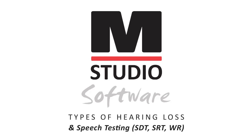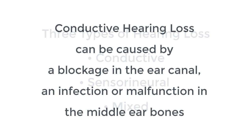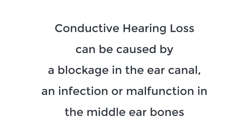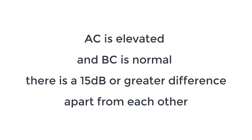After completing the air conduction and bone conduction tests, as well as any masking necessary for either one, you can then determine what type of hearing loss the patient has. There's conductive hearing loss, sensorineural hearing loss, and mixed hearing loss. Conductive hearing loss can be caused by something like a blockage in the ear canal, an infection, or a malfunction in the middle ear bones.